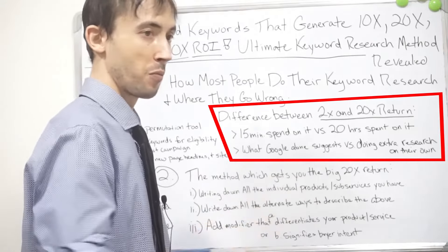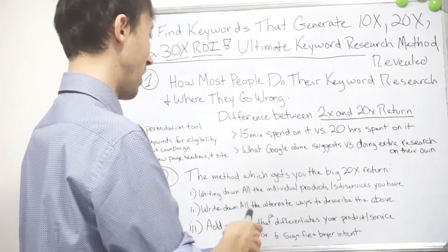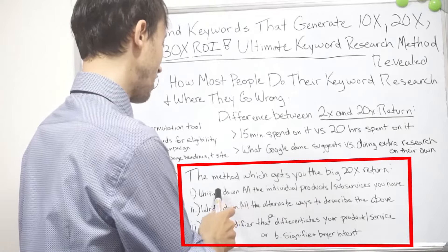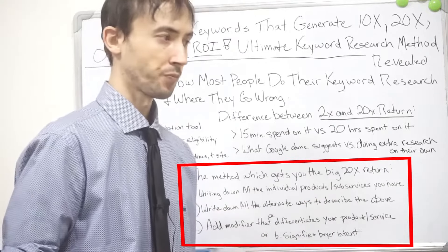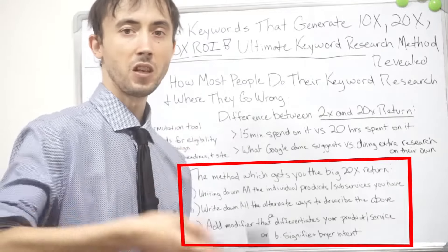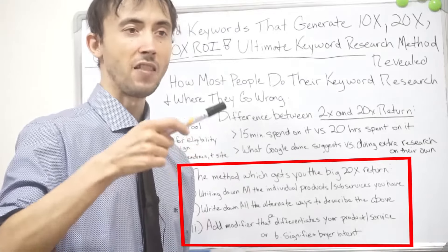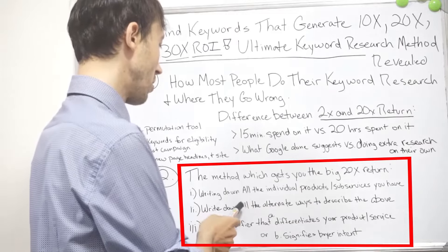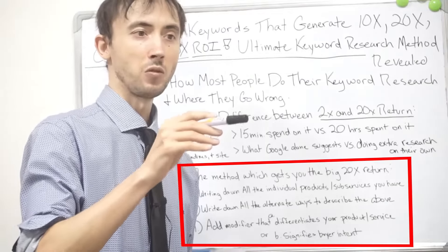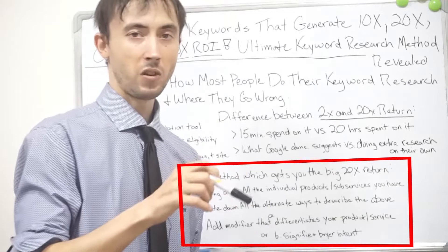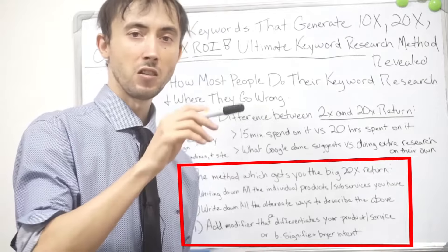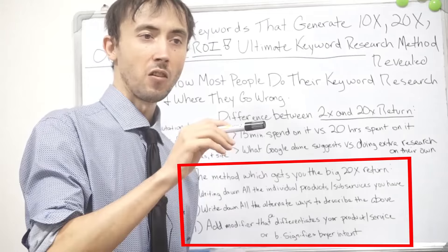The method that gets you the 20 times return like clockwork: first thing is writing down all the individual products and subservices you have. In the compliance software space, it might be just one individual product, but there are different products for different parts of the compliance process — write down each one. From there, go to the second step: write down all the alternative ways to describe the above. If the compliance software deals with tax reporting issues, write down what the derivatives of tax reporting are in the financial management space related to that same thing.